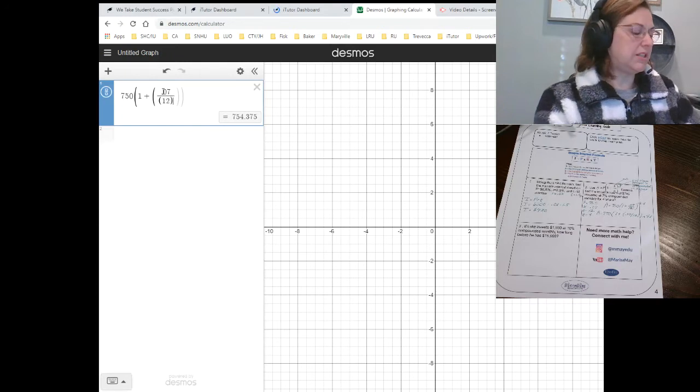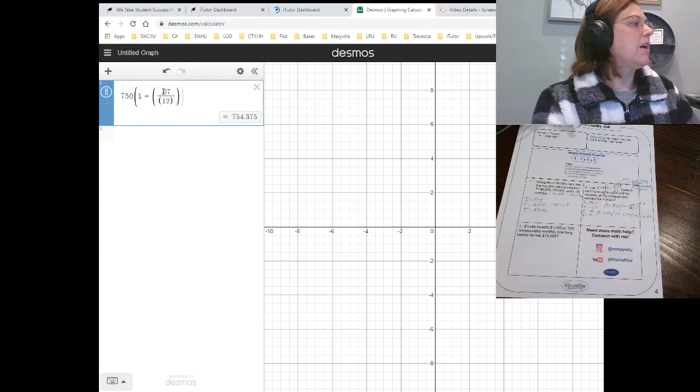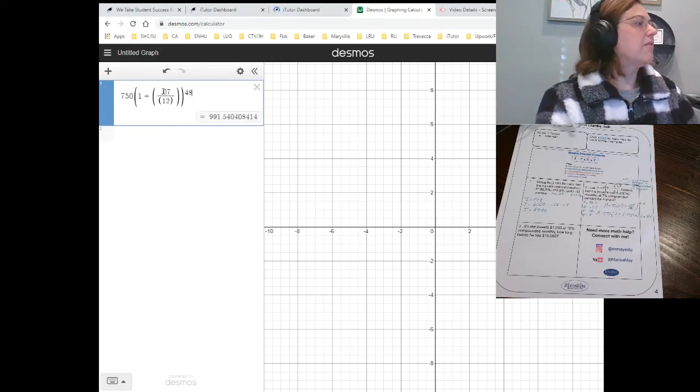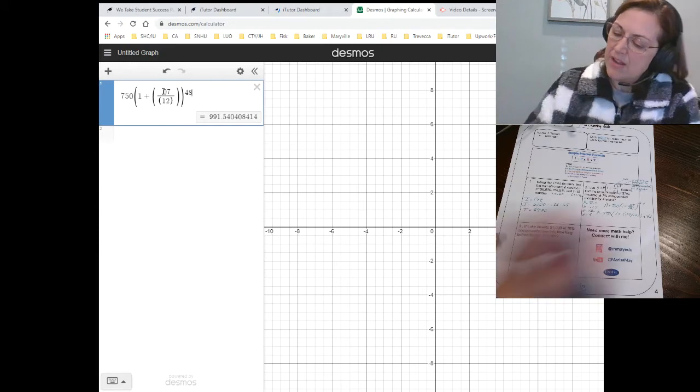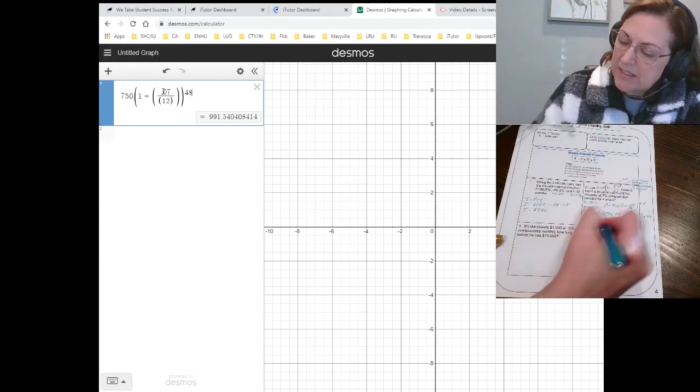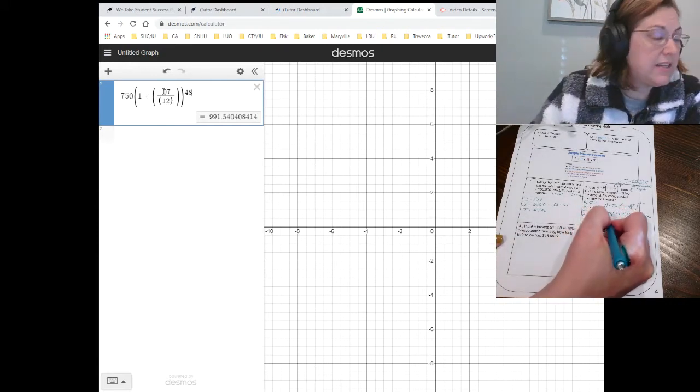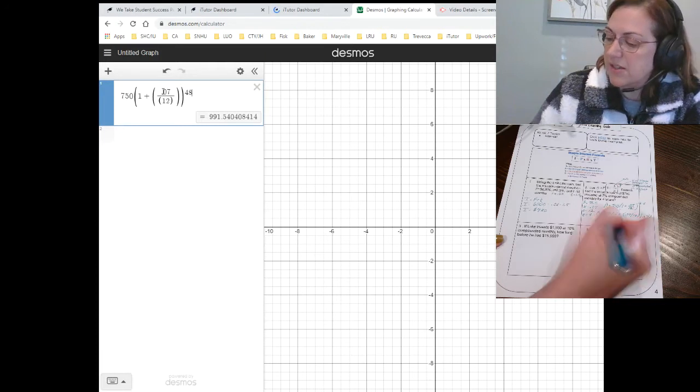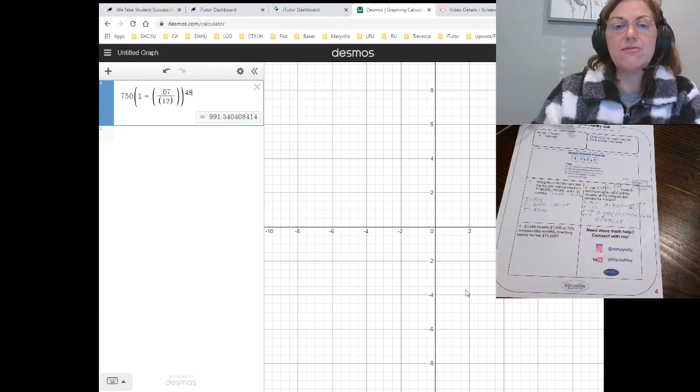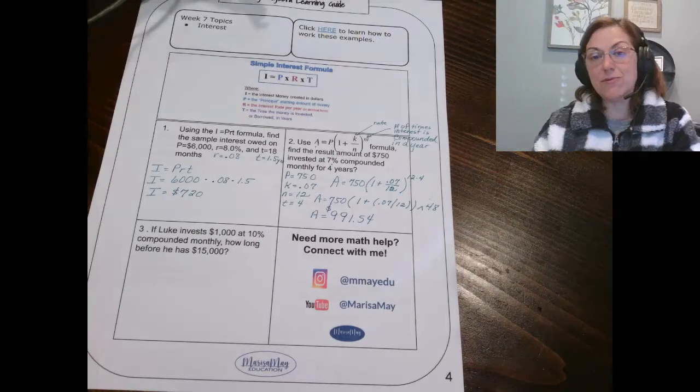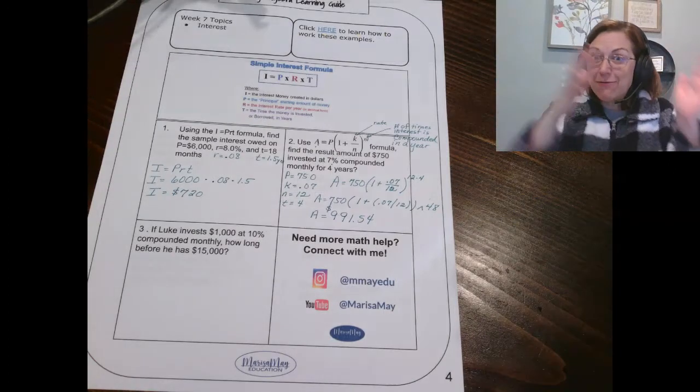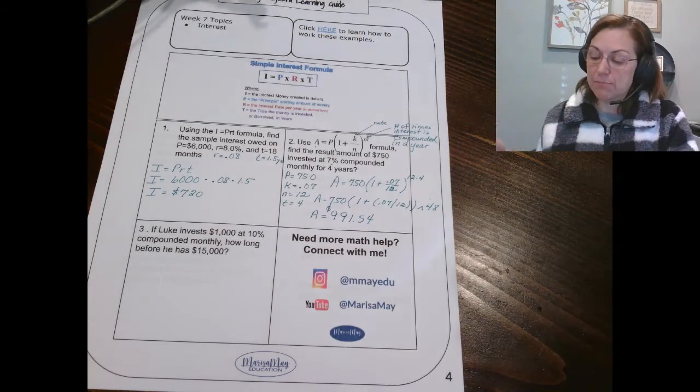So I'm going to type that in 750 parentheses, one plus parentheses 0.07 divided by 12, close, close. Now on Desmos, it's a little different. So we've got to use the right arrow to close and then close again. And now let's go carrot 48. And so my amount is $991.54. So notice this formula does not give the interest. This formula gives the amount after interest has been added.